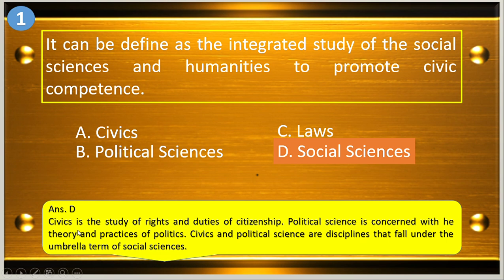Civics is the study of rights and duties of citizenship. Political science is concerned with the theory and practices of politics. Civics and political sciences are disciplines that fall under the umbrella term of social sciences. So the answer is social sciences.